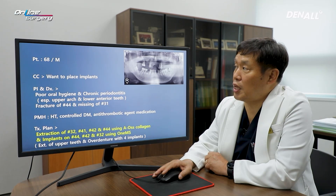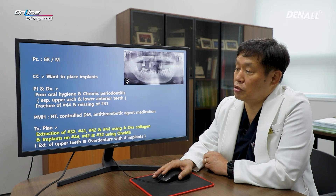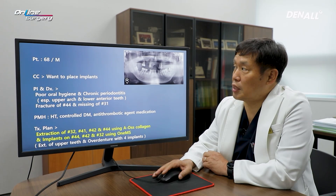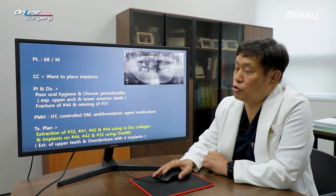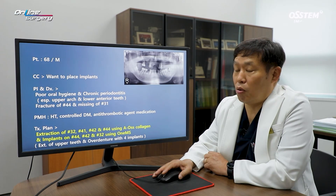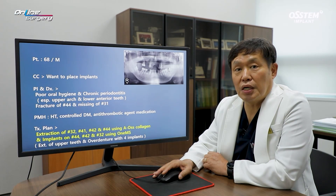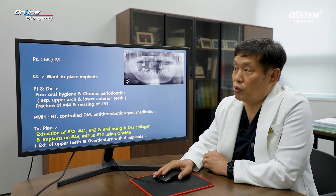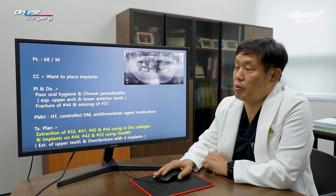The upper surgery will not be shown today. Alveolar bone atrophy was quite significant in the upper. The patient initially wanted a fixed prosthesis, but the upper lip looked quite sunken. So in the upper, an overdenture using 4 implants was recommended.